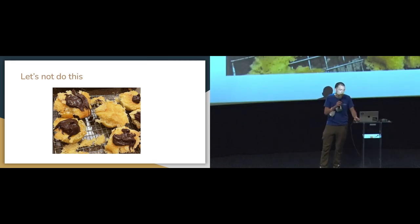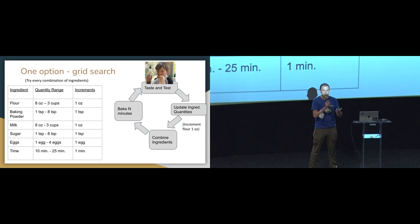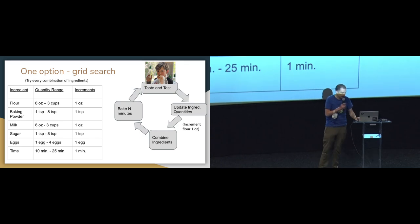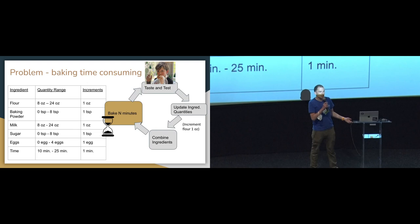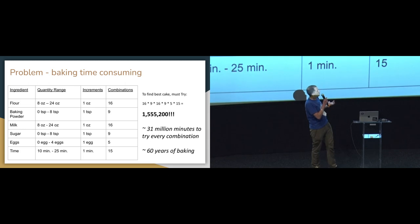This is generally what we're trying not to do. One option is grid search — sometimes machine learning is just one for loop inside another for loop inside another for loop until you find the optimum. We could try this: start with some ingredients, do a whole baking process, give it to my son to rate, then increment one ingredient — one ounce of flour — and repeat. But the problem is baking is very time-consuming. Doing a grid search is quite expensive. I estimate roughly 60 years of baking to find an optimum — not something we want to do.